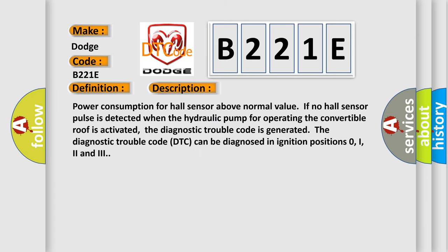Power consumption for Hall sensor above normal value. If no Hall sensor pulse is detected when the hydraulic pump for operating the convertible roof is activated, the diagnostic trouble code is generated. The diagnostic trouble code DTC can be diagnosed in ignition positions 0, 1, 2, and 3.